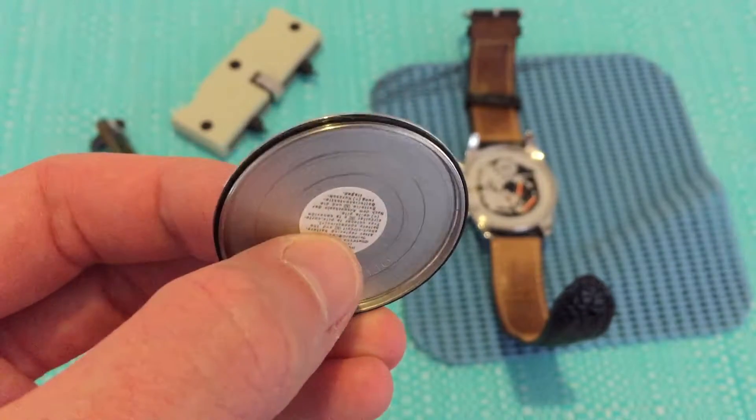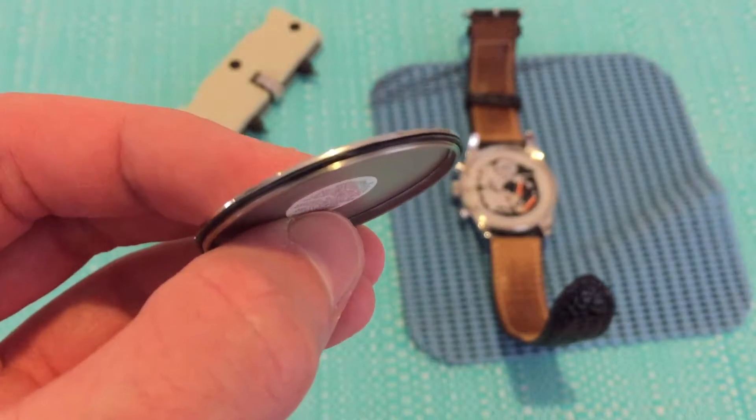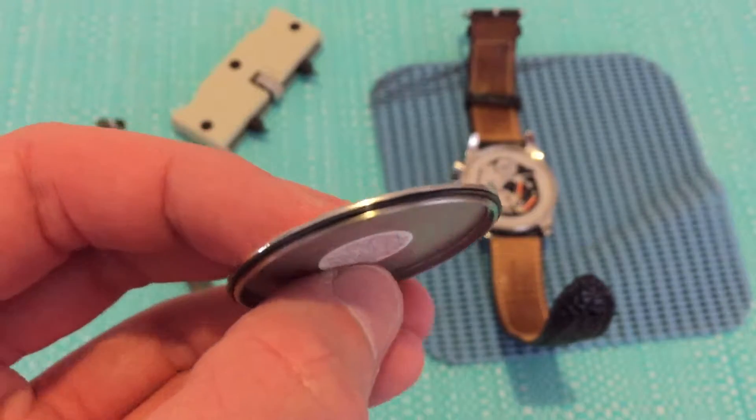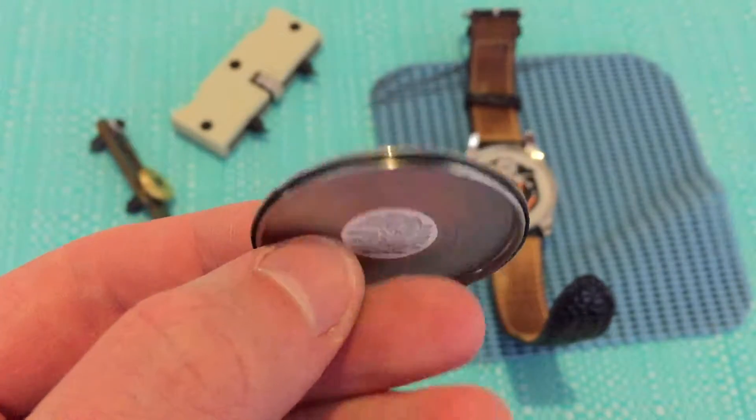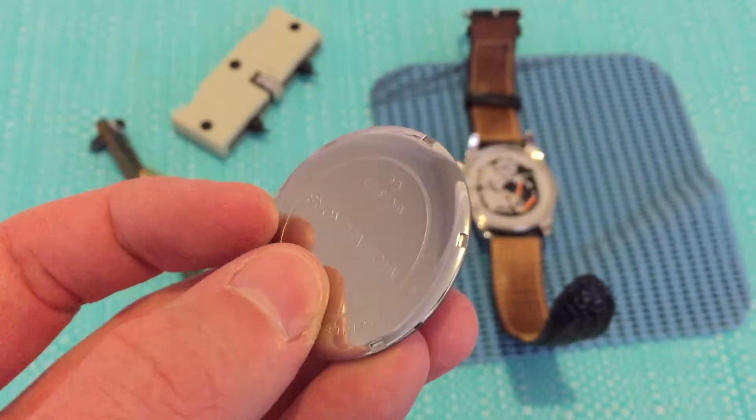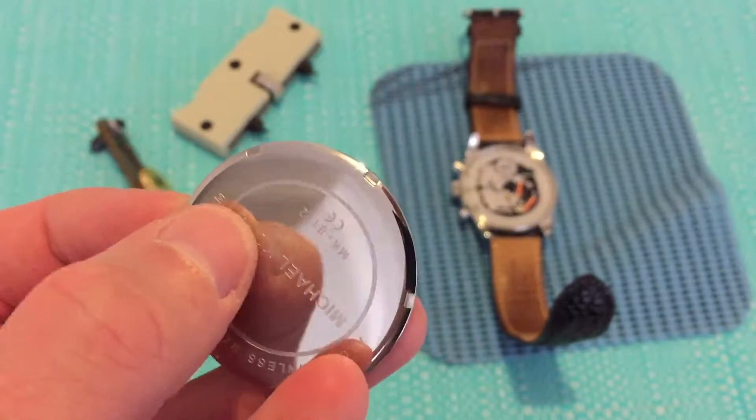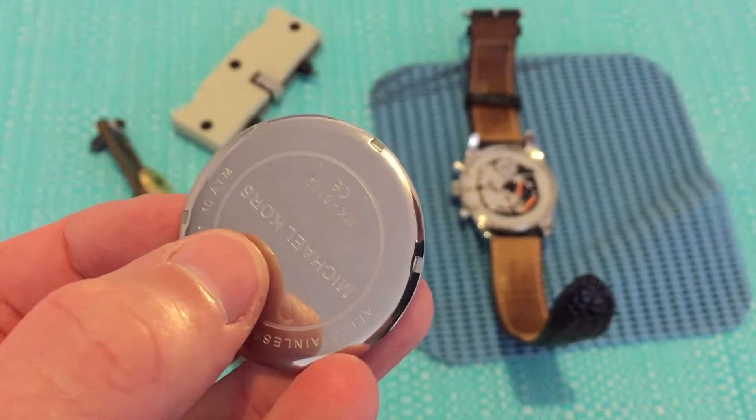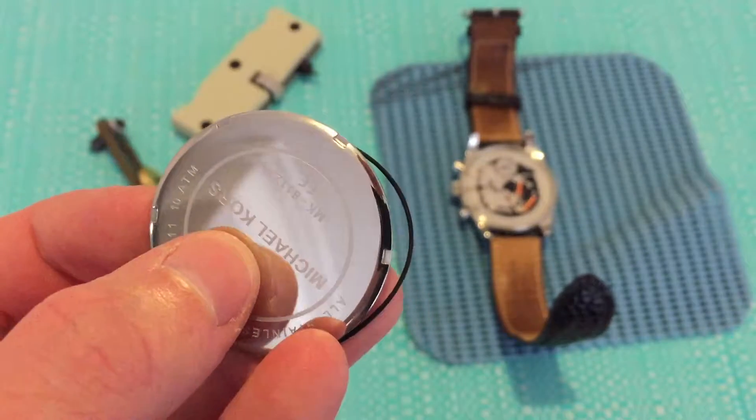This is the back that's been taken off the case. You can see there's some very slight grooves which hold it in place, and if we flip it over you can see the little notches around the back. This is the giveaway that it's a screw-back type case.